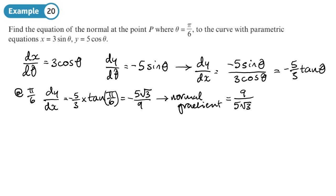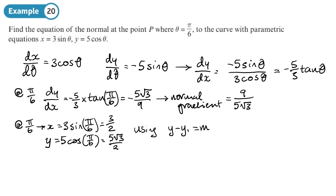So that's the gradient of the normal. What we want is an x and a y coordinate so that we can use y minus y1 equals m times x minus x1. So again, at pi over 6, the x coordinate is going to be 3 times sine pi over 6, so let's work out what that is: 3 sine pi over 6, and that gives us 3 over 2. And y, the y coordinate, is going to be 5 cos pi over 6, so 5 times cos pi over 6, and we get 5 root 3 over 2.